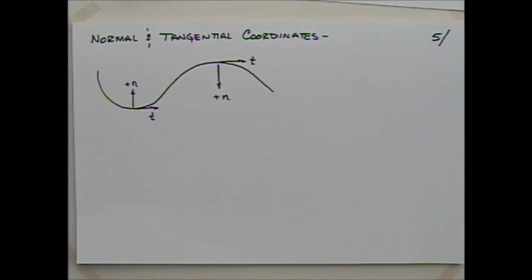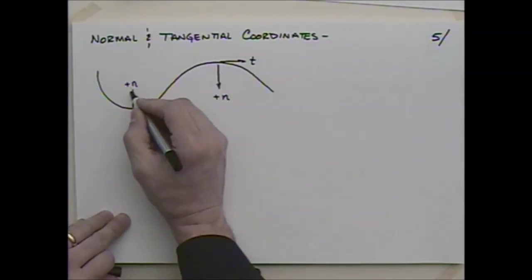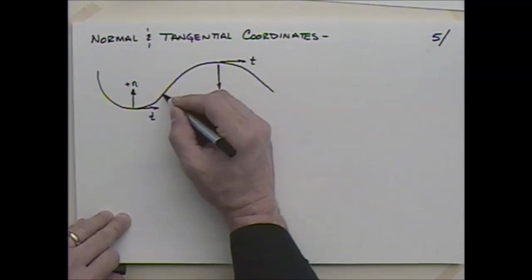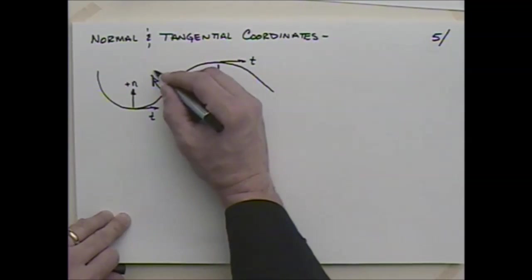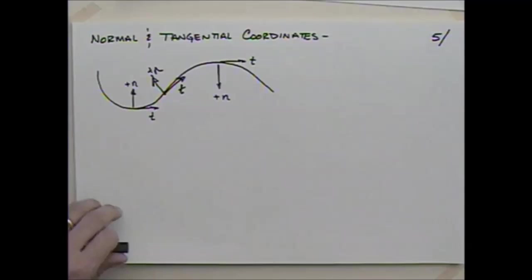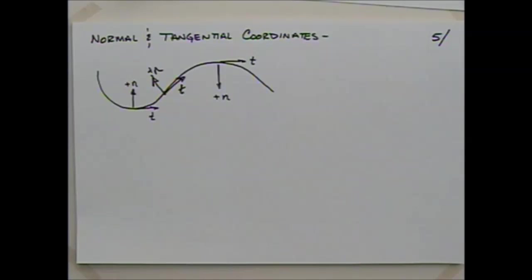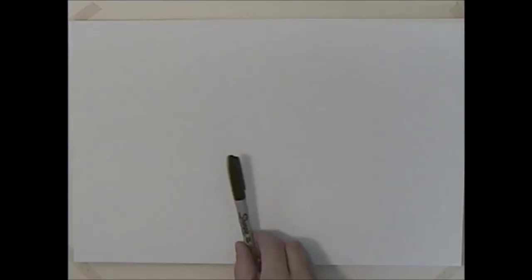The next topic is normal-tangential coordinates, which are more complicated because the coordinate directions change continuously. The normal direction always points toward the center of curvature, while the tangential direction points along the path. These changing directions have more complex mathematical implications, but the coordinate system is very useful and we'll use it a lot.